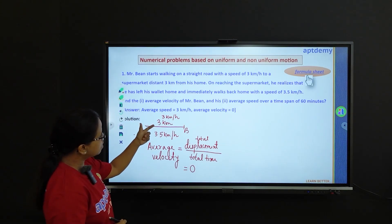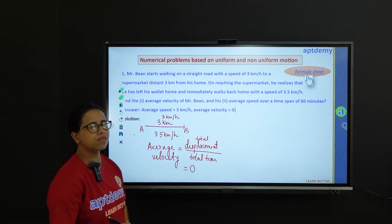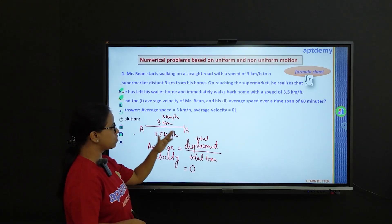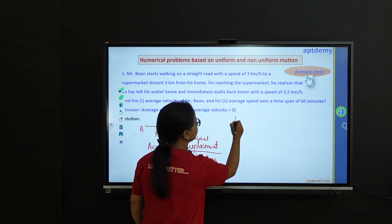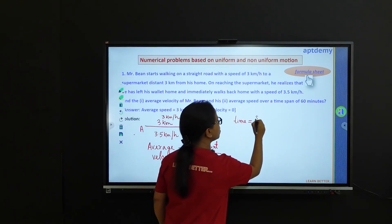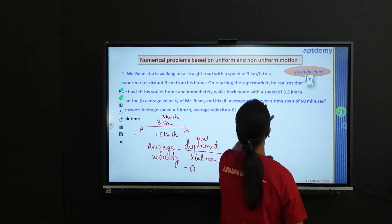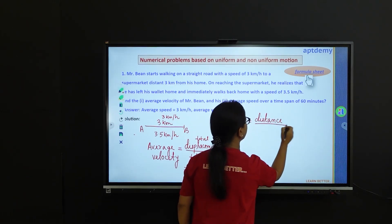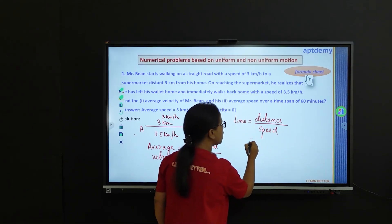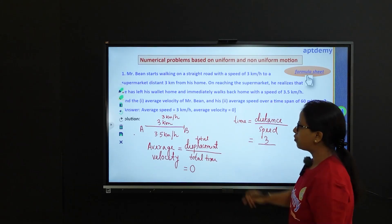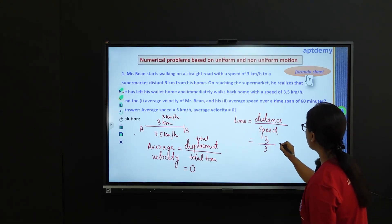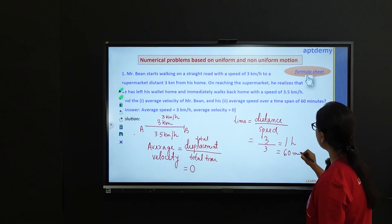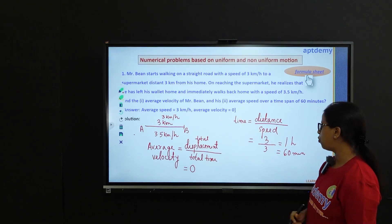Now consider the case of average speed. We know speed is nothing but distance over time. So if we are asked to find out the time taken by Mr. Bean in going from his home to the supermarket, the time taken can be calculated as time equals distance upon speed. During the start journey, the distance is 3 km and the speed was 3 km per hour. So we have a time of 1 hour, that is 60 minutes. Mr. Bean going from his home to the supermarket took a total time of 60 minutes.